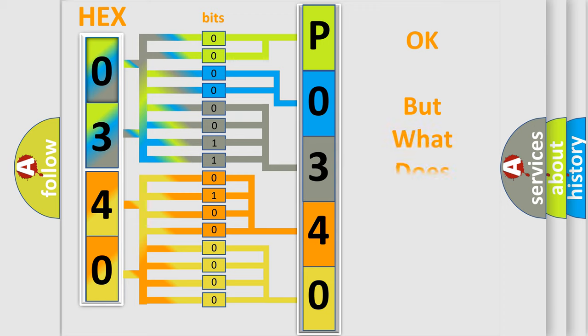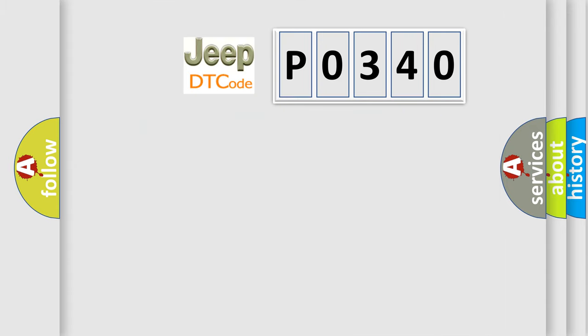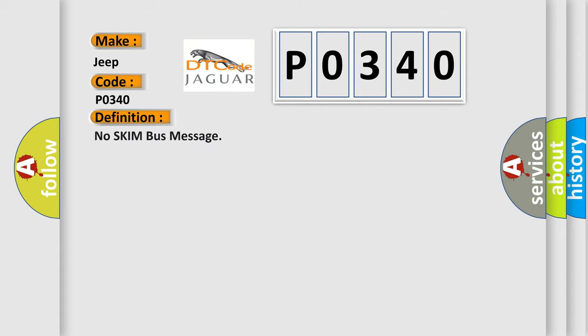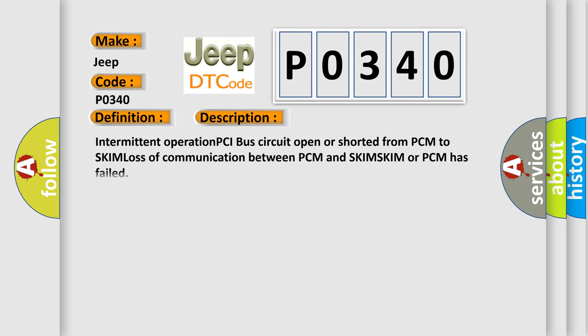The number itself does not make sense to us if we cannot assign information about what it actually expresses. So, what does the diagnostic trouble code P0340 interpret specifically for Jeep car manufacturers? The basic definition is: No SKIM bus message. This is a short description of this DTC code: intermittent operation, PCI bus circuit open or shorted from PCM to SKIM, loss of communication between PCM and SKIM, or SKIM/PCM has failed.